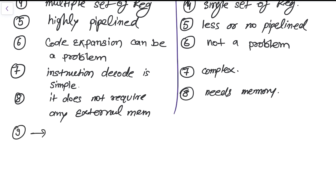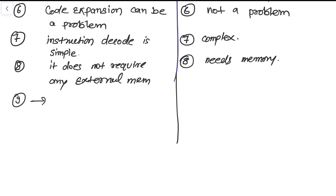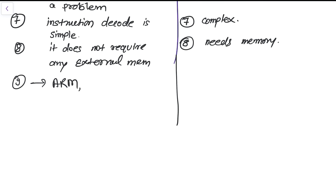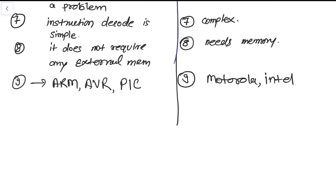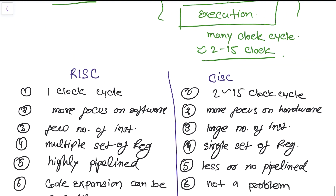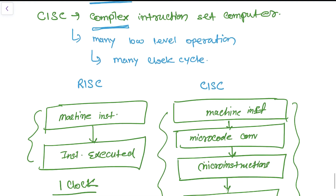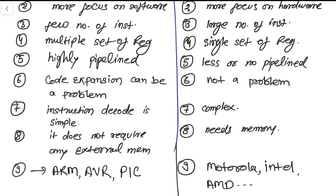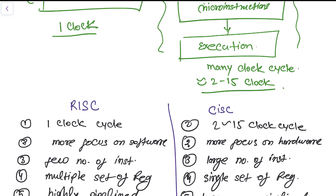The very famous vendors who implement RISC type of instructions are ARM, AVR, and PIC type of microcontrollers. In CISC we have Motorola, Intel, and AMD, and so on. In this video we have seen what are the differences between RISC and CISC architecture and who are the manufacturers of RISC and CISC type of microcontrollers and microprocessors. I hope this video has helped you. Thank you so much for watching — please subscribe so you can get updates directly to your inbox.